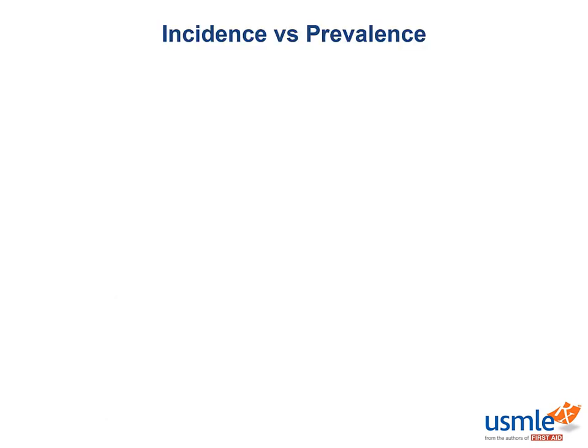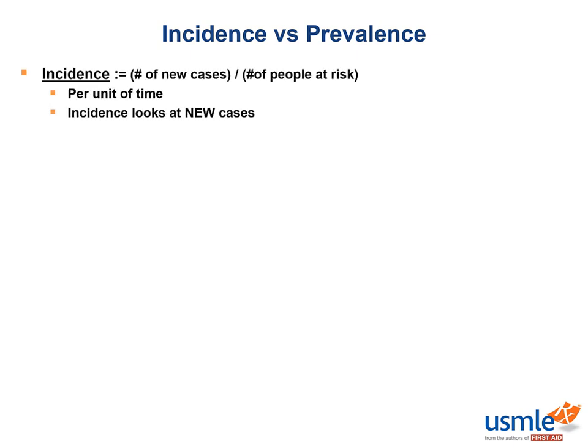Let's discuss the differences between incidence and prevalence. The incidence of a disease is defined as the number of new cases in a population over a given period of time, divided by the total population at risk during that time.